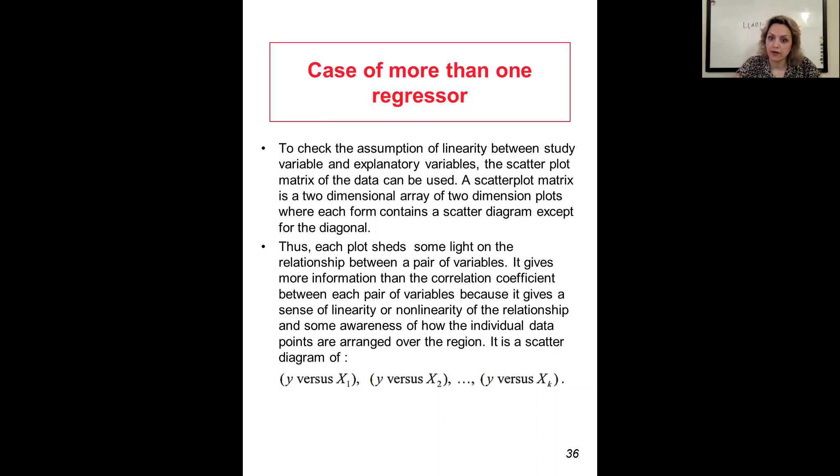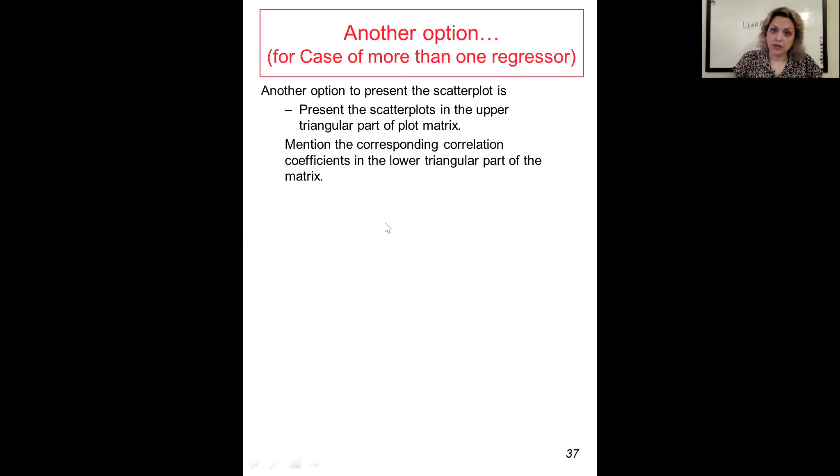Each plot sheds some light on the relationship between a pair of variables. It gives more information than the correlation coefficient because it gives a sense of linearity or non-linearity of the relationship and awareness of how the individual data points are arranged over the region. Another option is to present the scatter plot in the upper triangle part of the plot matrix and mention the corresponding correlation coefficient in the lower triangle part.